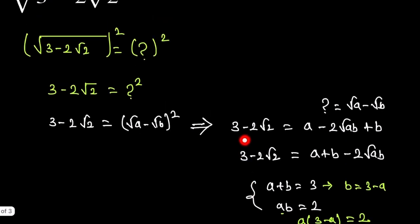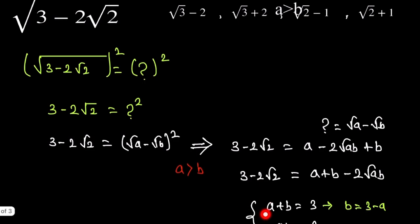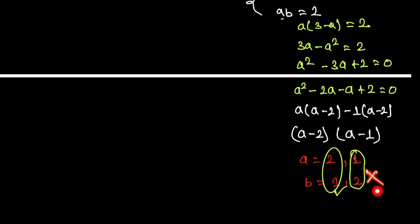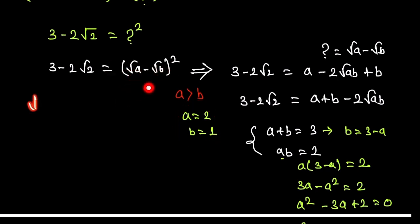Since a must be greater than b for the expression (√a - √b) to be valid, we take a = 2 and b = 1. The case a = 1, b = 2 is not valid because a would be smaller than b.